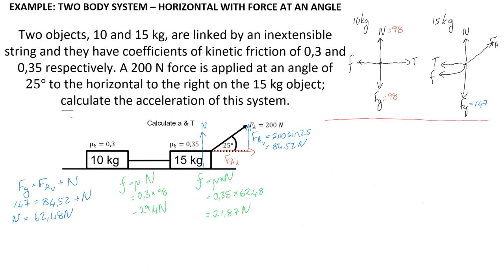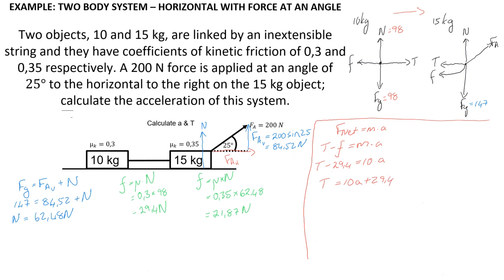Now we follow the next step and write a Newton's second law expression for each object. For the 10 kilogram object: F_net = ma, where the net force is the tension to the right minus the friction to the left. The tension is unknown, friction is 29.4 N, and the mass is 10 kg. This simplifies to: T = 10a + 29.4.